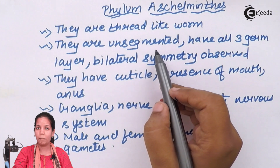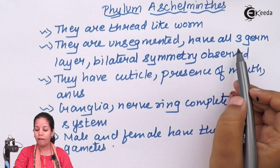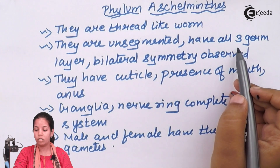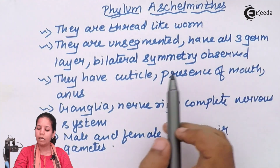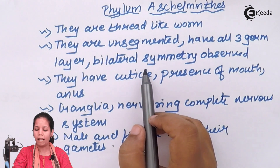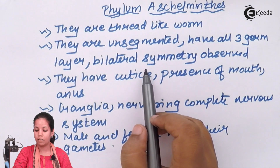They are unsegmented. All three germ layers are present in them — endoderm, ectoderm, and mesoderm. The symmetry is bilateral symmetry, the same as that observed in human beings.